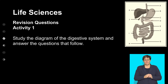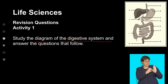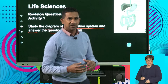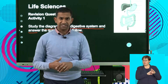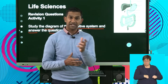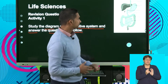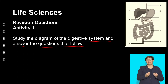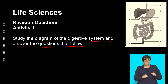Activity one: study the diagram of the digestive system and answer the questions that follow. In a question based on the digestive system, it's important that you understand the digestive system. Here we've got the digestive system and we've got to label the parts.